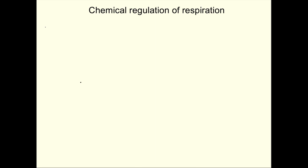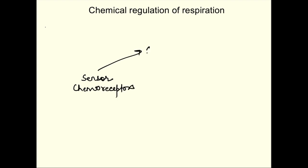Chemical regulation of respiration is a feedback control system which changes the rate of ventilation depending on changes in the chemicals important for respiration: the partial pressure of oxygen, partial pressure of carbon dioxide, and pH. Like any negative control system, we have a sensor — chemoreceptors — a control center comprising the neural centers of respiration in the medulla and pons, and a response which changes the rate and depth of ventilation.